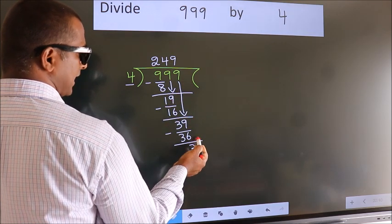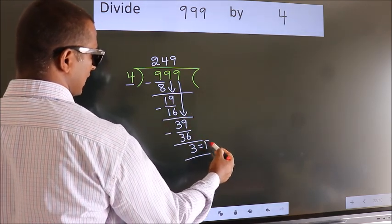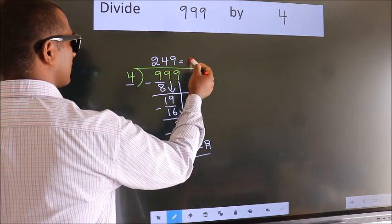No more numbers to bring it down. So, we stop here. This is our remainder. This is our quotient.